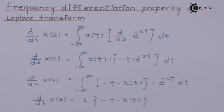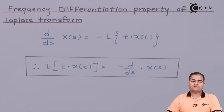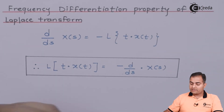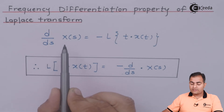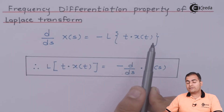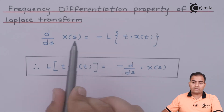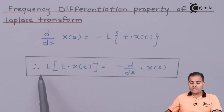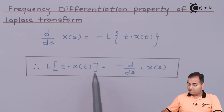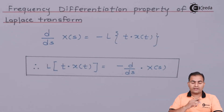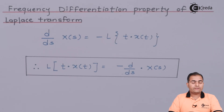This is the proof — the last two lines are remaining. We have almost proved the property: D by DS of X(S) equals the Laplace transform of minus T times X(T). If I take minus sign common and shift it to the left hand side, then what remains is: the Laplace transform of T times X(T) equals minus D by DS of X(S). This is the property, and this is the simple way to prove the frequency differentiation property of the Laplace transform.